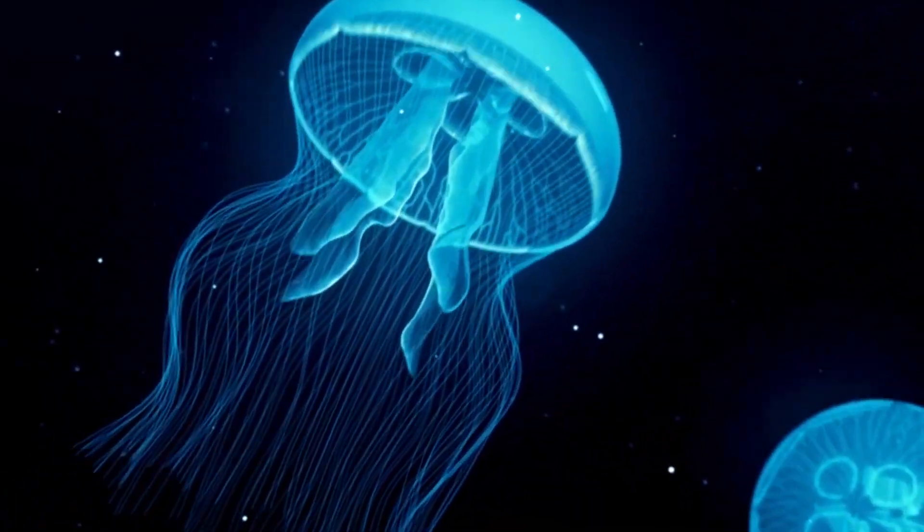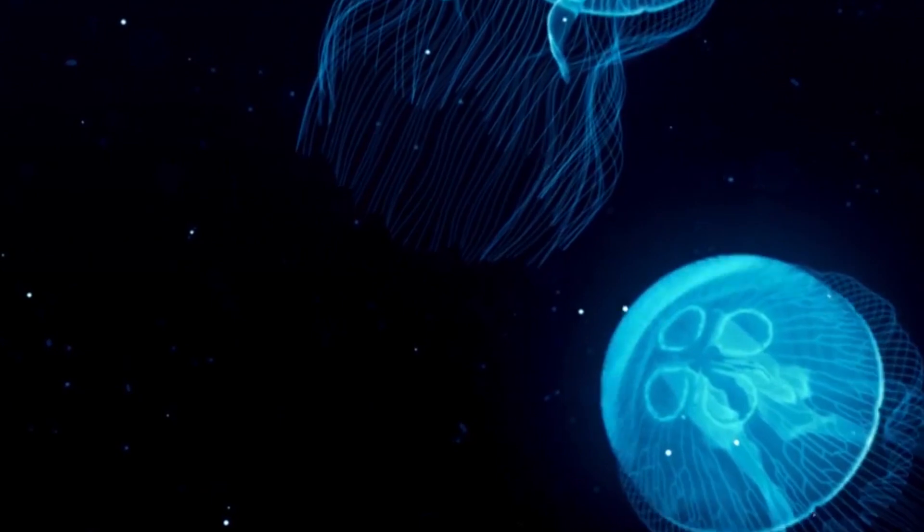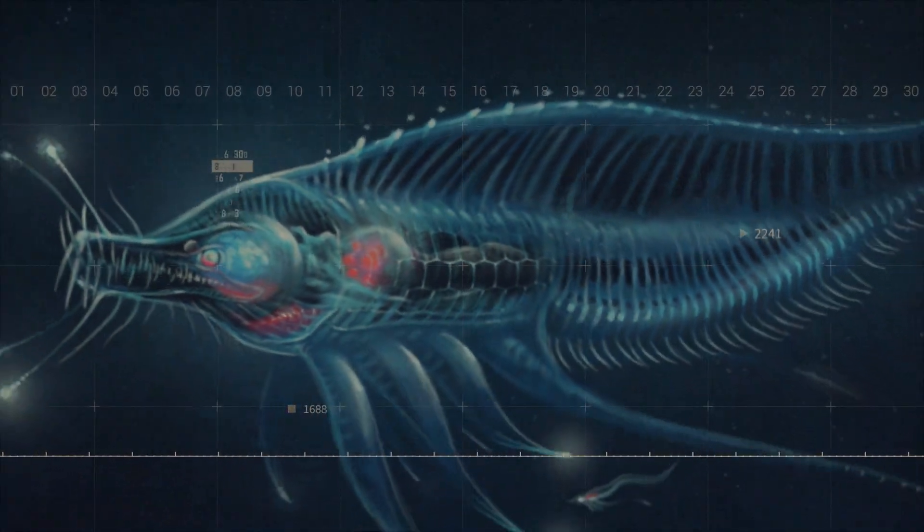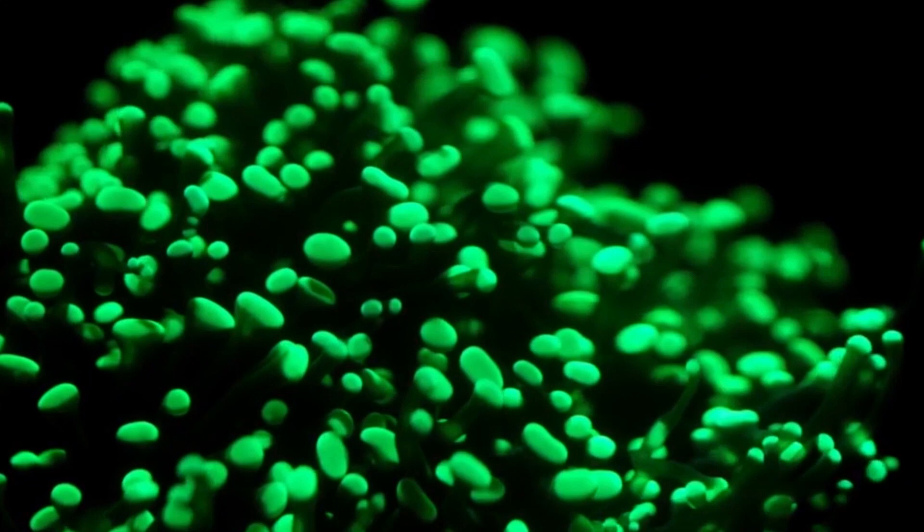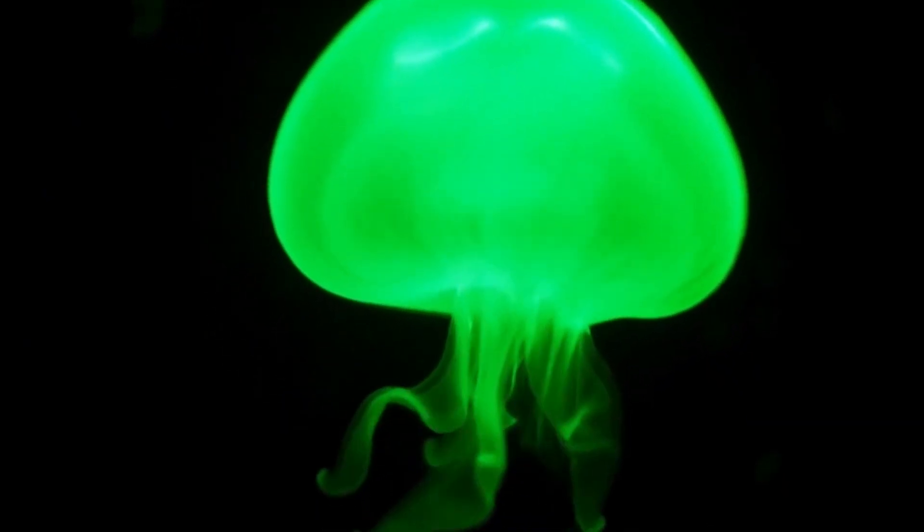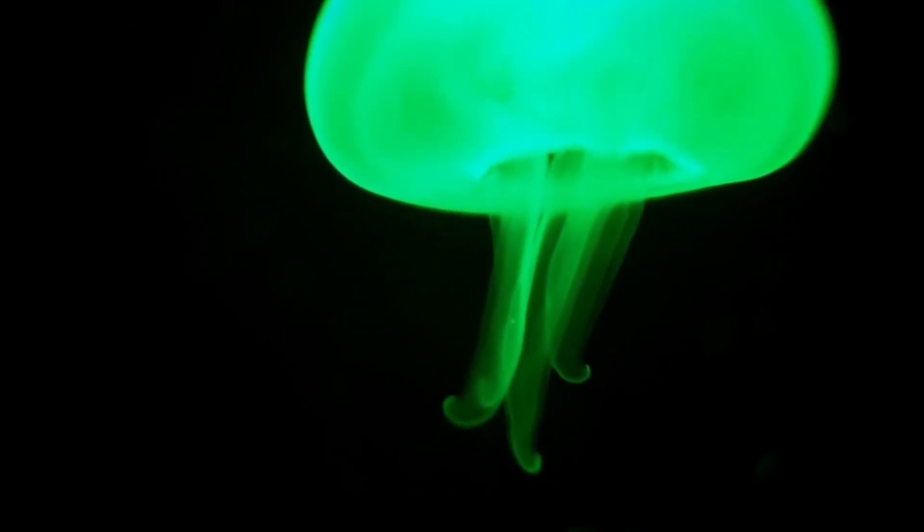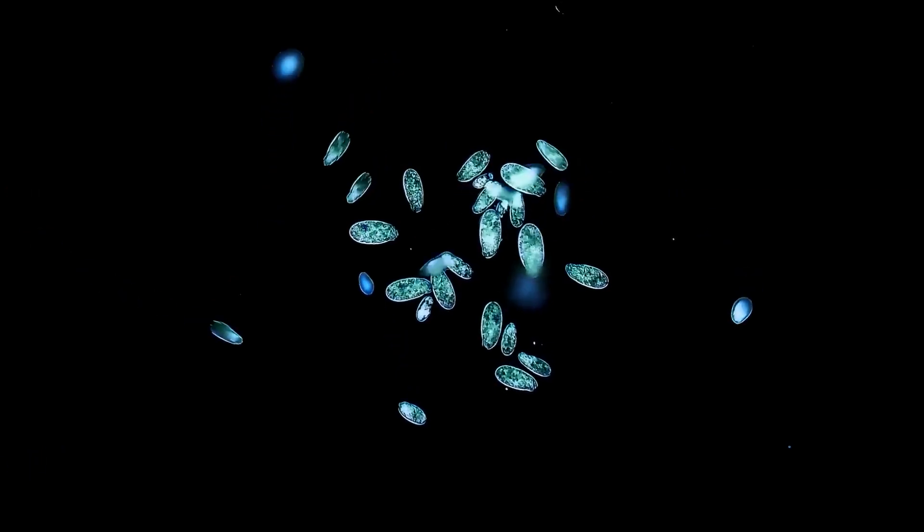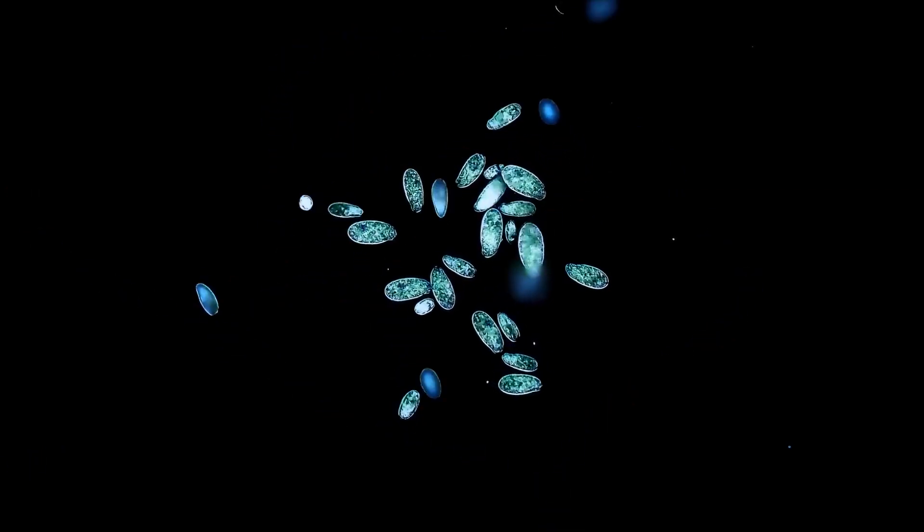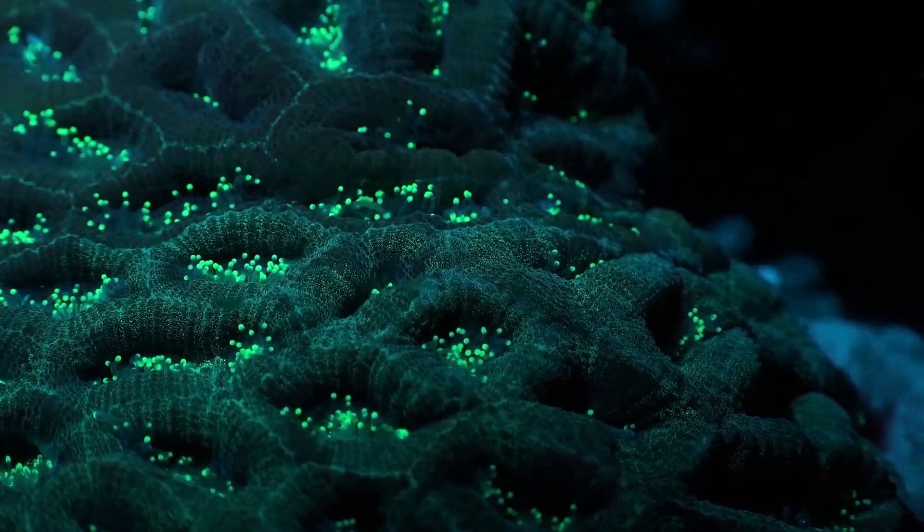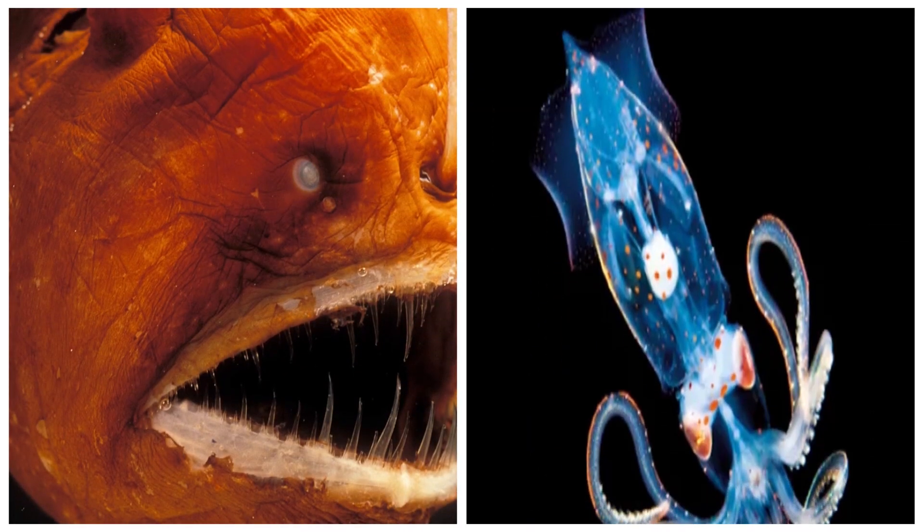While many deep-sea creatures produce their own light through internal chemical reactions, some have developed a different strategy. They host bioluminescent bacteria in their light organs. The relationship between these creatures and their light-producing tenants is a classic example of symbiosis. The host provides a safe, nutrient-rich environment for the bacteria, and in return, the bacteria provide light. This arrangement is seen in various species, including some anglerfish and squid.